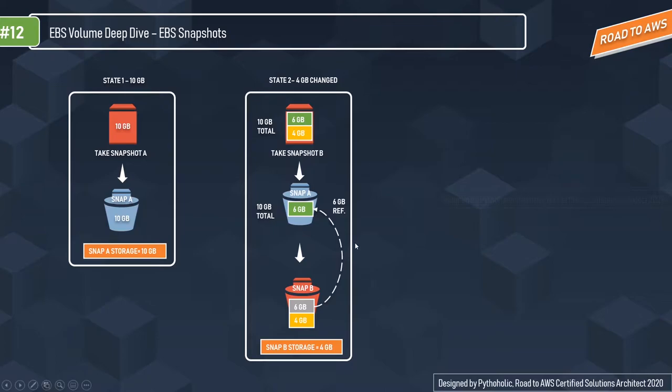This is how we avoid duplicating data. Out of 10 GB, 4 GB gets changed and we back up that 4 GB in the snapshot. For the remaining 6 GB we simply refer to the previous snapshot without creating a copy — the 6 GB is referenced from Snap A.